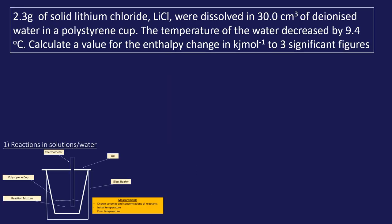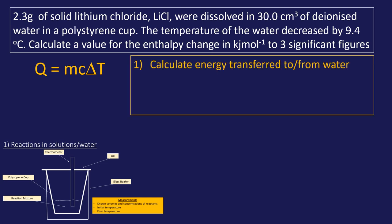Let's look at a specific example using this data. We know we'll use Q = mcΔT. The first step is to calculate the energy transferred to or from the water. The biggest mistake people make is assuming the mass is 2.3 g because they see that in the question — that is wrong. The first step uses the energy transferred to or from the water, and the water mass is not 2.3 grams.